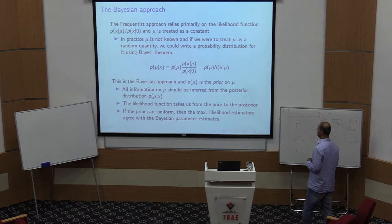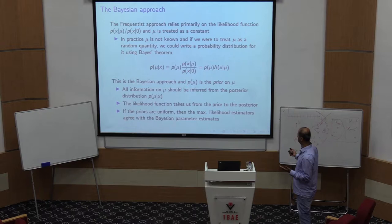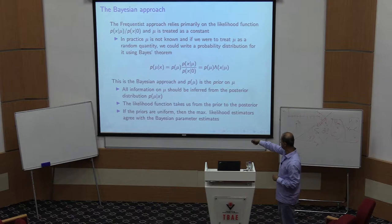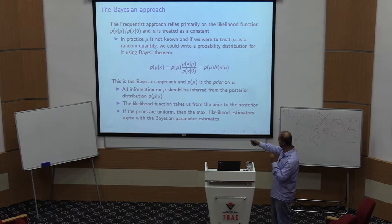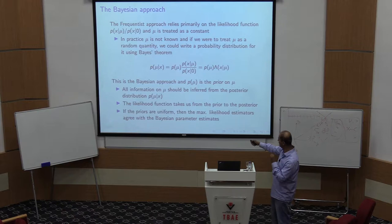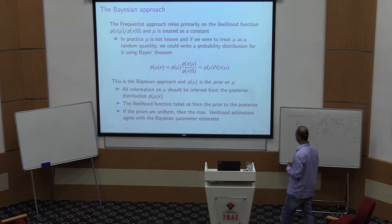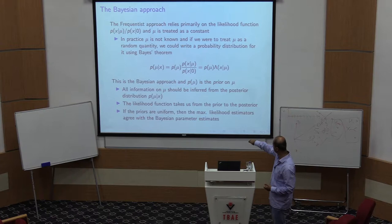In practice, mu is not known, and you can treat it as a random quantity. So you can write a distribution for mu given the data. A frequentist would never write a distribution for something believed to be a constant. But if your viewpoint is that mu should be treated as a random variable, you are free to write this and apply Bayes' theorem.